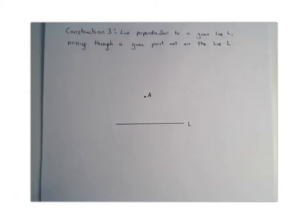For construction number 3, we want to look for the line perpendicular to a given line L, so this is our line, passing through a given point not on line L. So this is our point A, and we basically want to construct a perpendicular line going through A that is perpendicular to our line L.